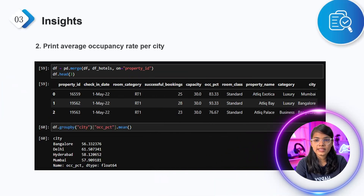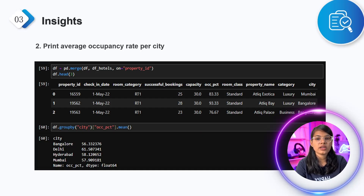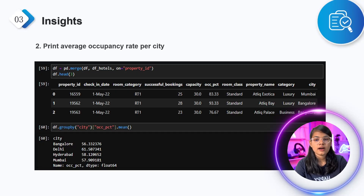The second question: what is the average occupancy rate per city? Similarly, I used a merge function where I merged two columns on property ID, and then used the groupby function followed by city to get our insights.